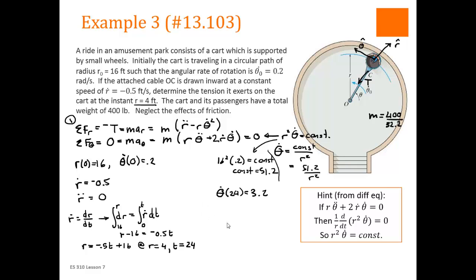So I'm going to call this equation 1. We'll come down here and finish working with equation 1. The negative tension is going to equal the mass, 400 divided by 32.2, times r double dot, 0, minus r, 4, times theta dot squared. Theta dot is 3.2 squared.